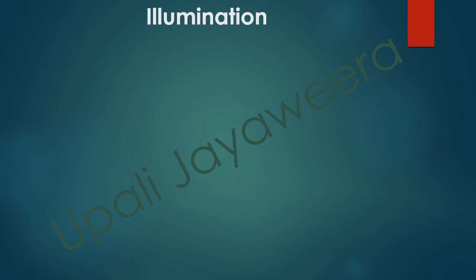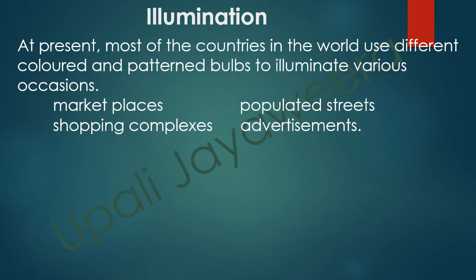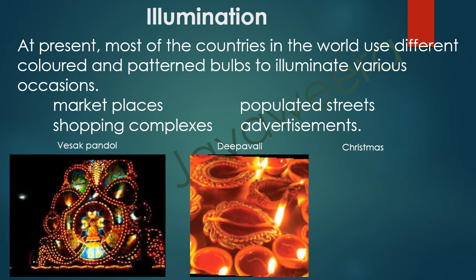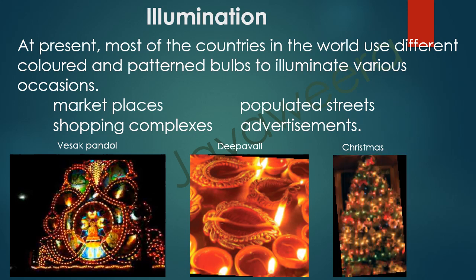For the illumination process, light is needed. At present, most countries in the world use different colored and patterned bulbs to illuminate various occasions — for example, market places, populated streets, shopping complexes, advertisements, and in festivals like Vesak, Dipavali, and Christmas.